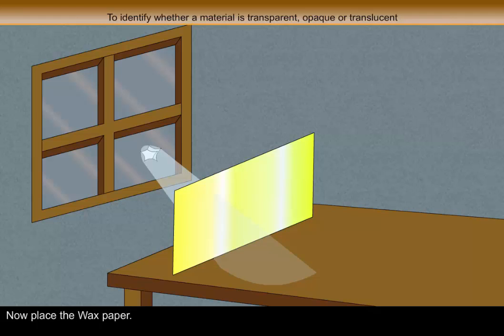Now place the wax paper. Yes, light passes partially. So the material is translucent.